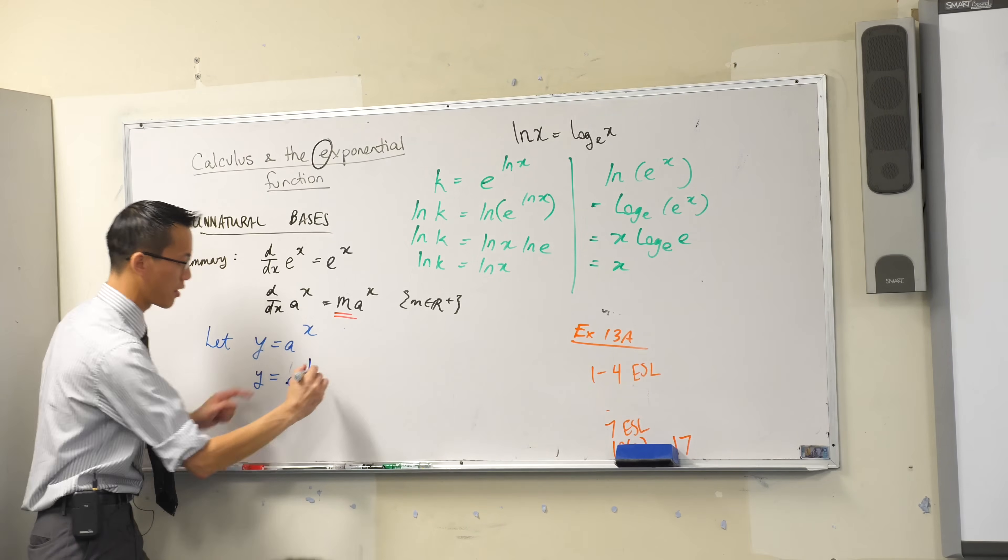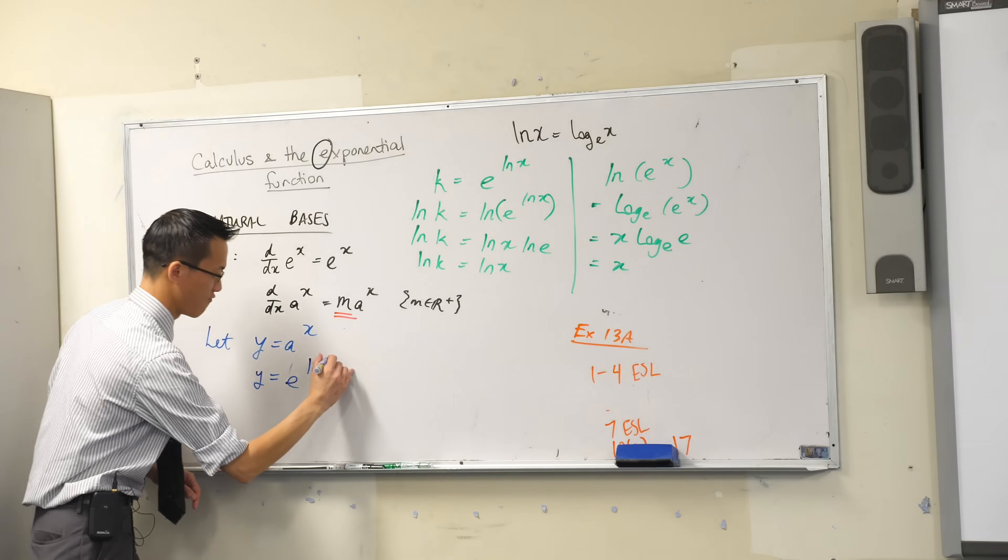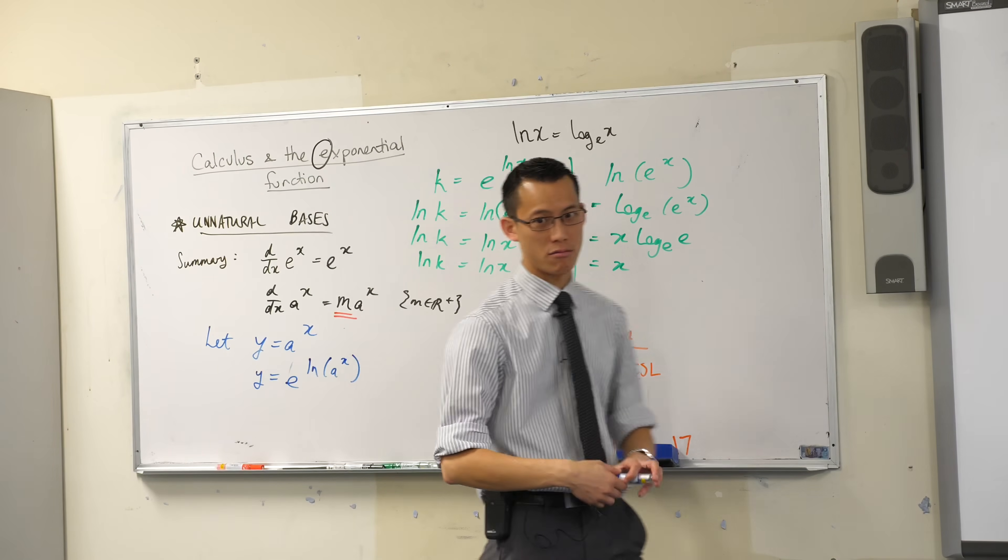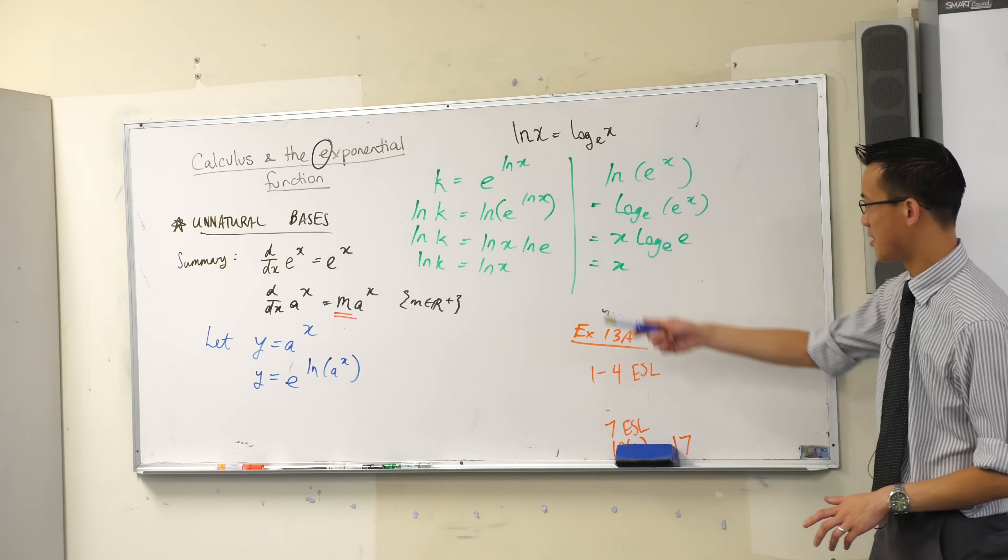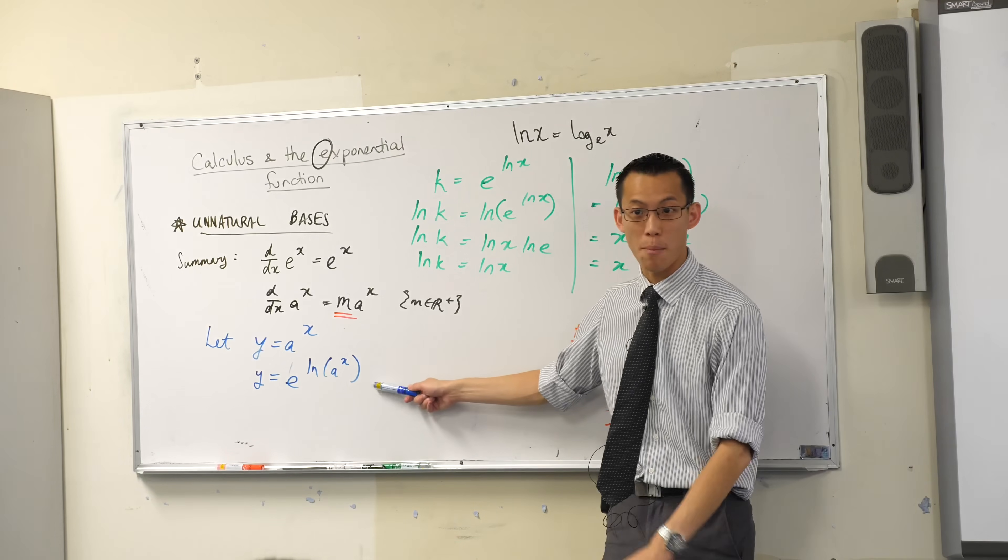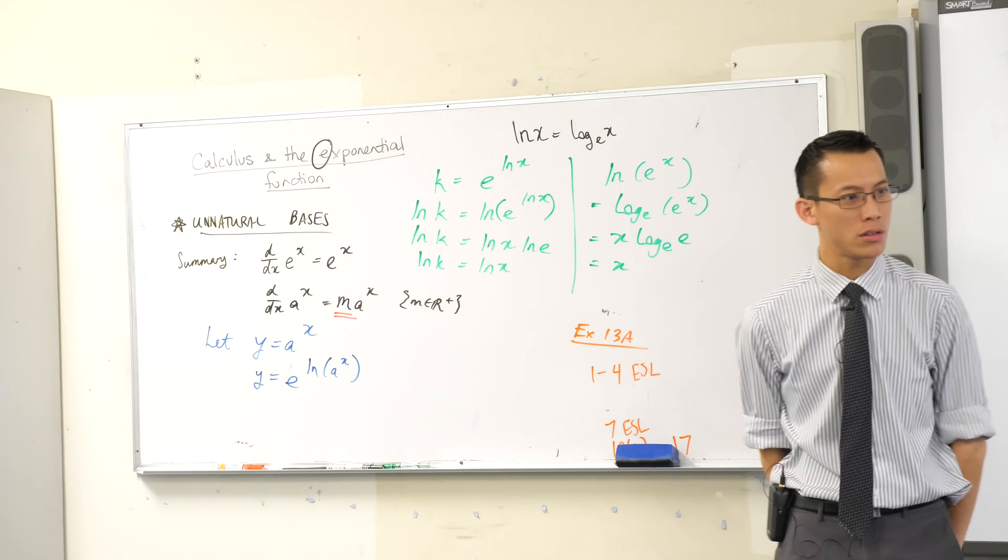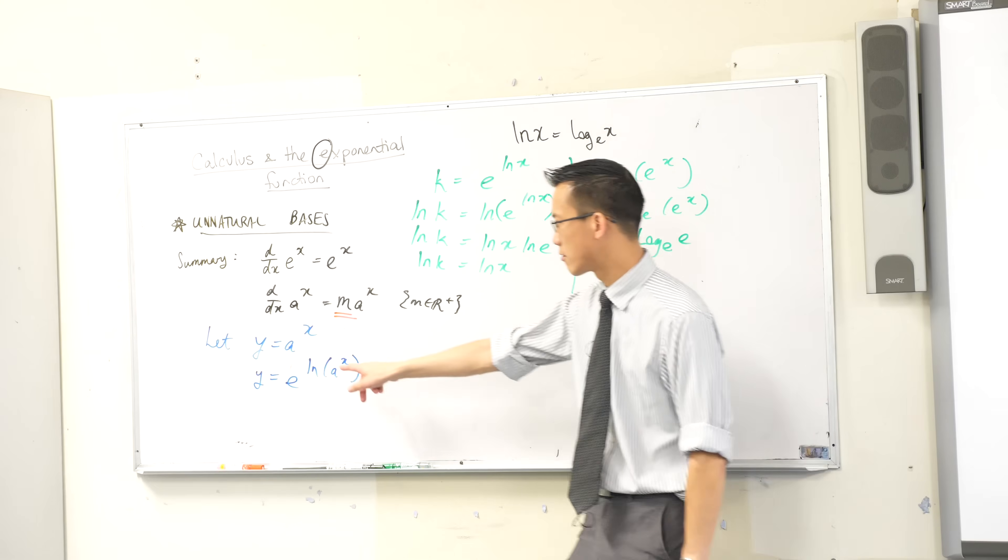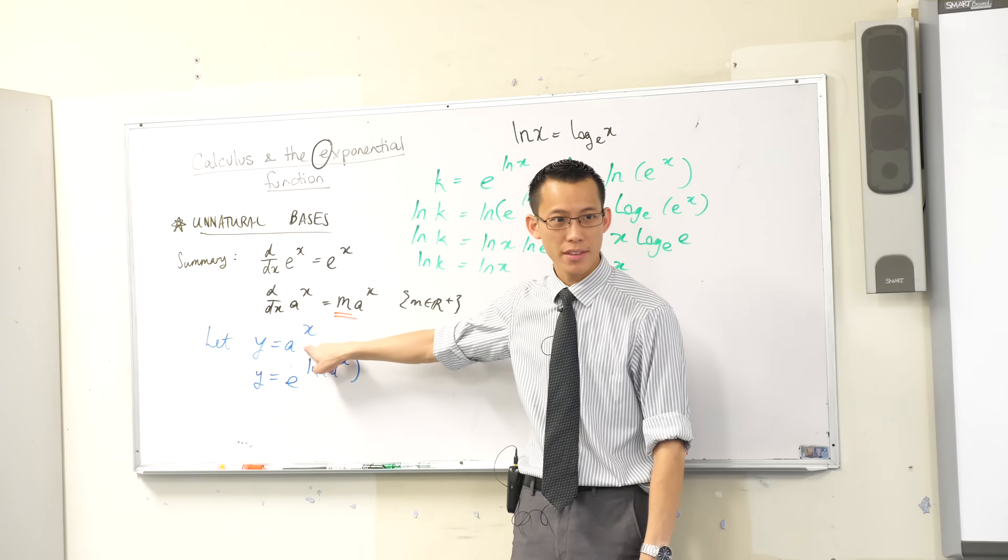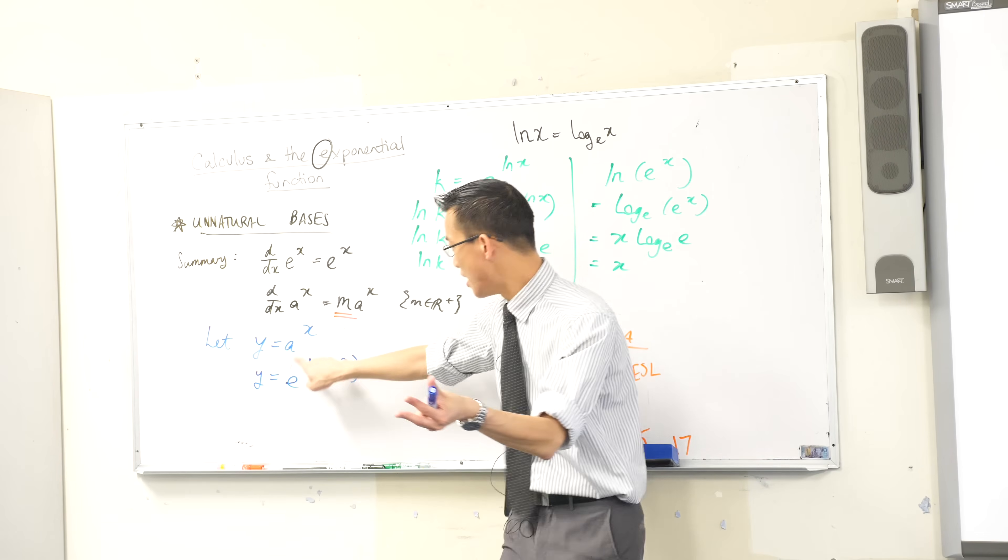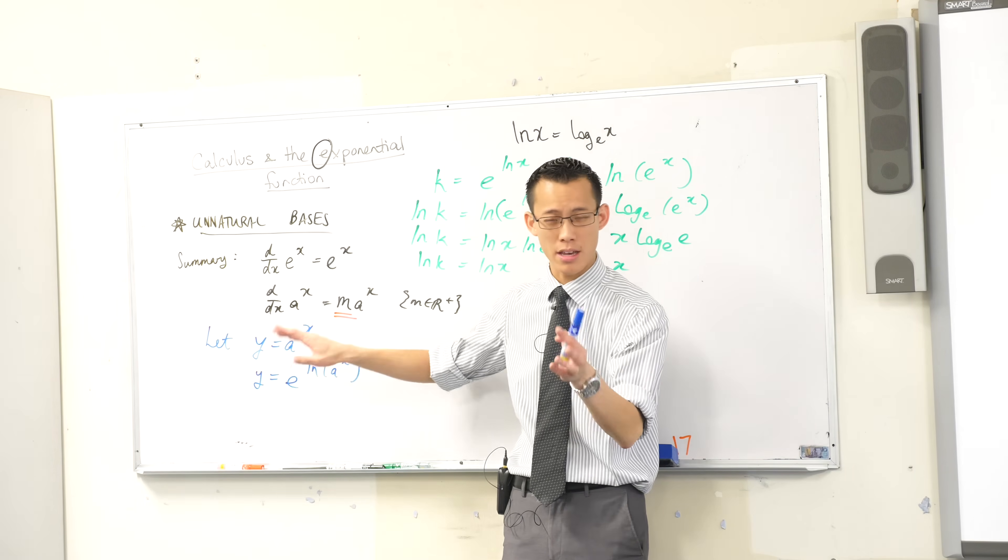So I'm going to take advantage of that fact over here. Instead of writing y equals a to the x, I'm going to write y equals e to the power of log of that. I admit, it looks very awkward and strange. Why would I do this and use this? Clearly this is more complicated and messy than this. Well, do you remember what my original problem was? Like, why was this a non-starter? It's because it has an unnatural base. So what I'm going to do is rewrite it in such a way so it does have a natural base. Are you with me so far?